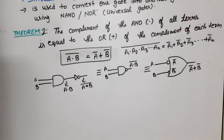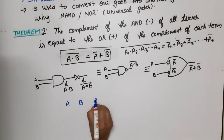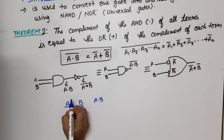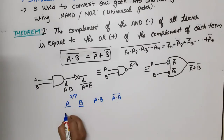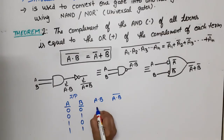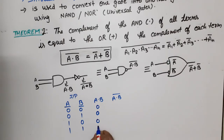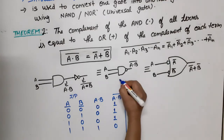Now let's verify with the truth table. For two variables A and B with four combinations: 0 0, 0 1, 1 0, 1 1. The product A dot B gives: 0, 0, 0, 1. The complement (A dot B) bar gives: 1, 1, 1, 0. This is the output of the NAND gate. Now for the right-hand side, A bar gives 1, 1, 0, 0 and B bar gives 1, 0, 1, 0.